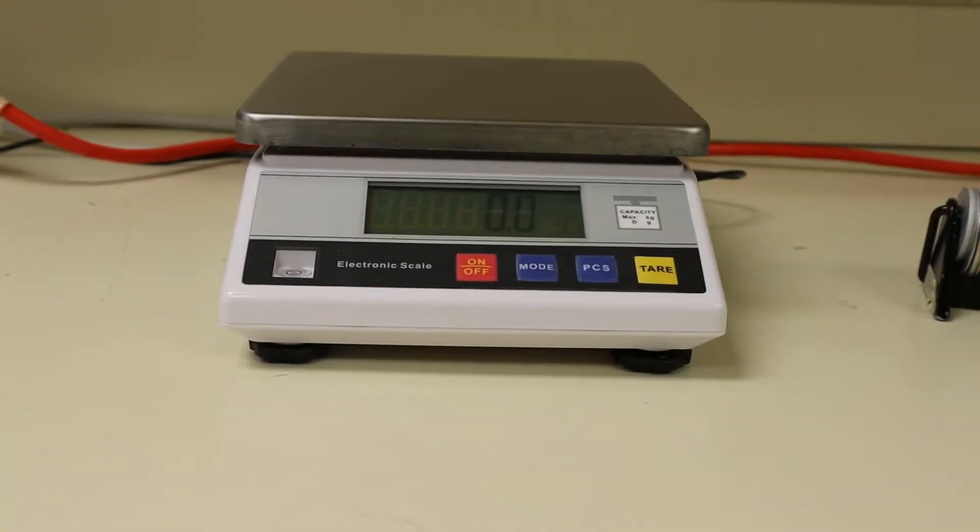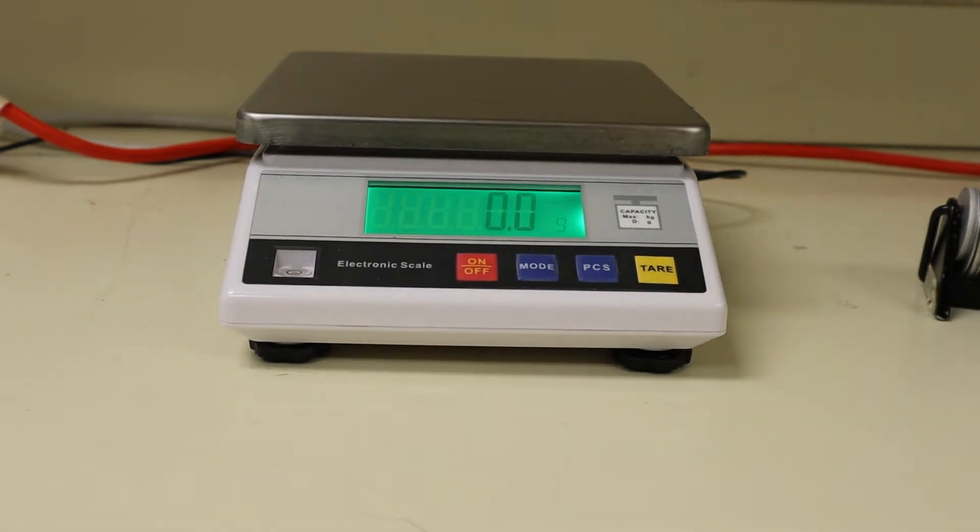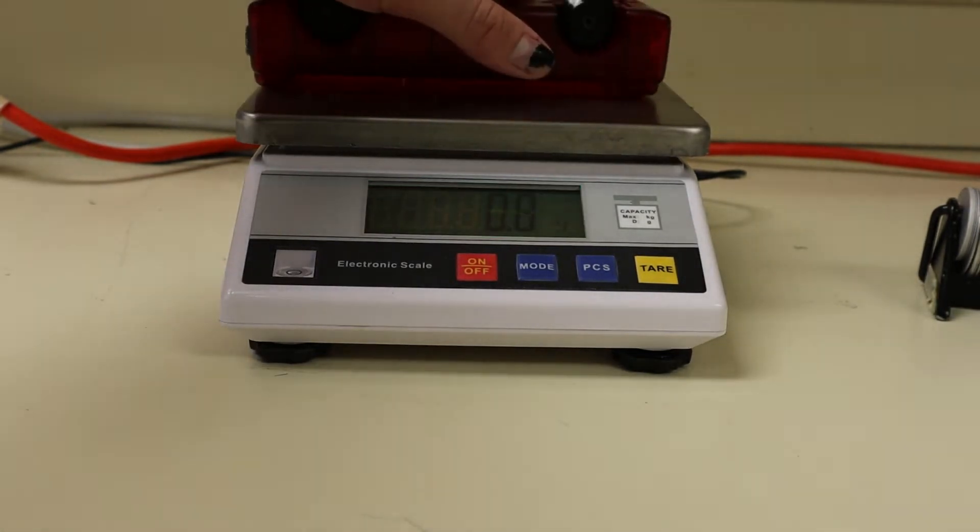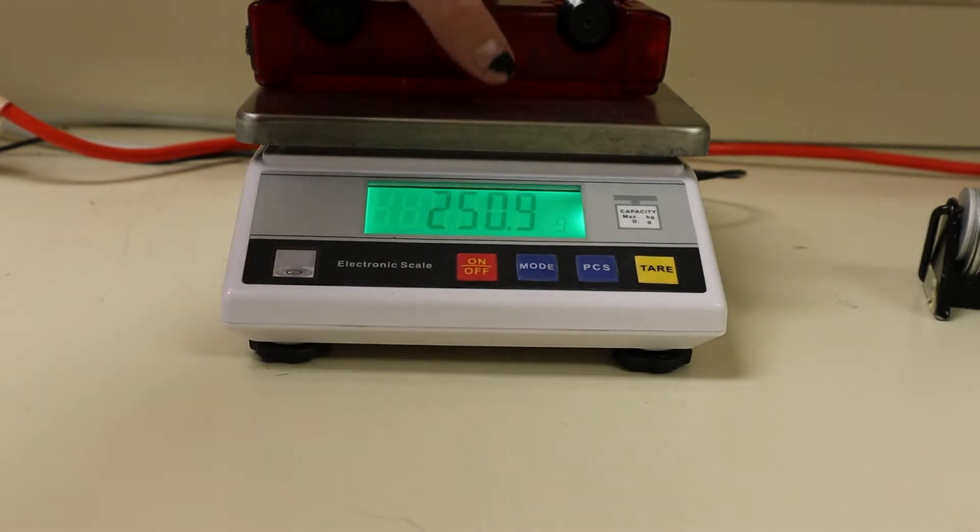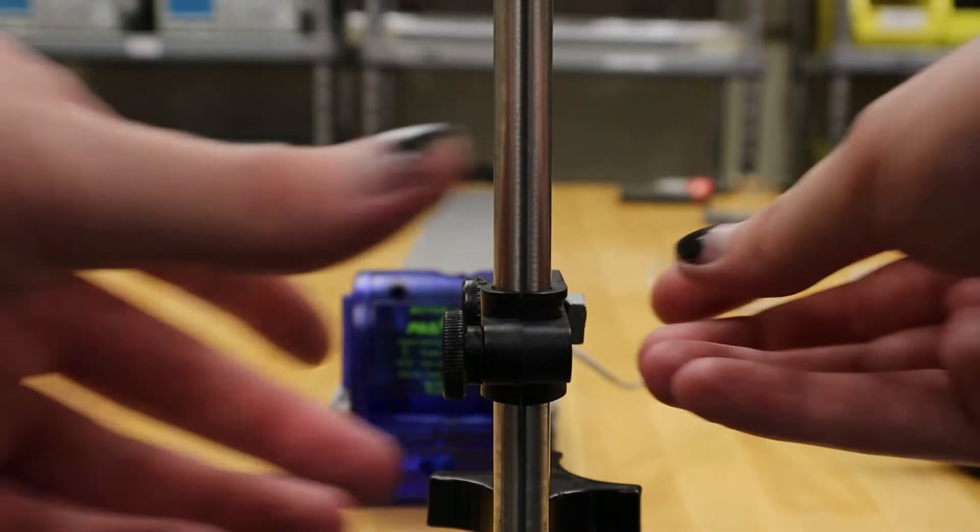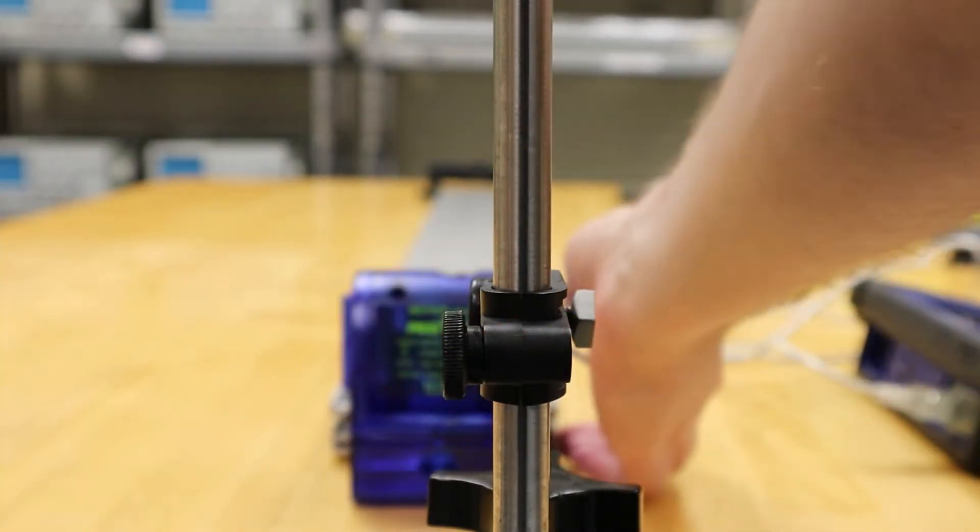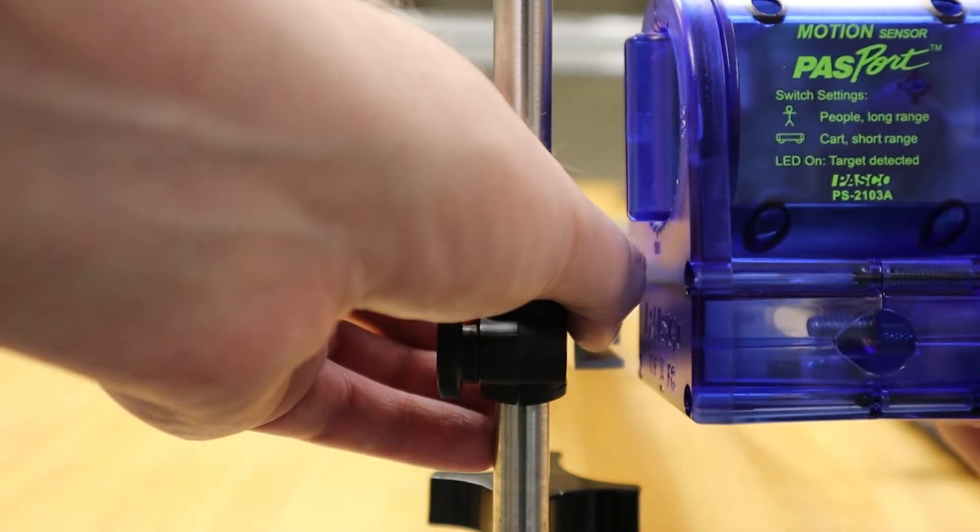We will start the experiment by acquiring the mass of both passcars and recording this in our datasheet. With the mass recorded, we are now ready to set up for Procedure A. For Procedure A, we will need to mount our track to the rod attached to the table. To do this, we will loosen the square nut, thread it through the gap of our track, and then tighten it securely.